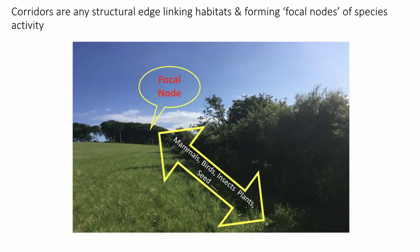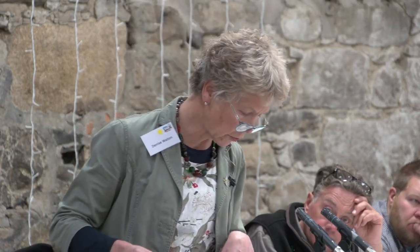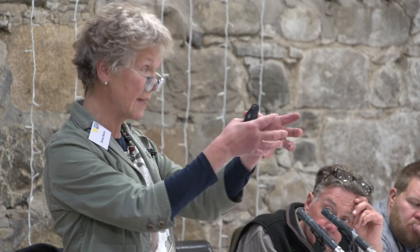The connection between habitats is via corridors. Here we've got a nice big hedge — this is a north-facing field at home — along which you can get mammals, birds, insects, and plant seed actually migrating to what I call a focal node. The focal node is basically where you get the meeting between two different habitats and the concentration of energy, food, and greater species activity. A corridor can be anything from a thicket edge to a burn to a woodland edge — any difference in either vertical or horizontal structure.